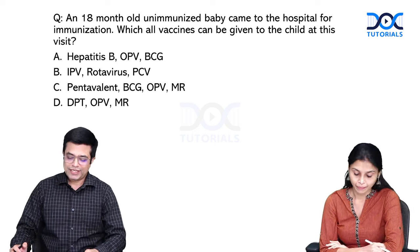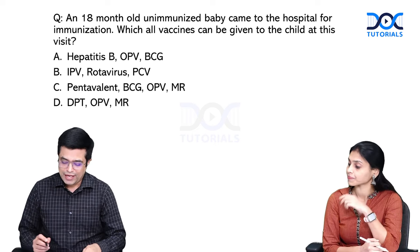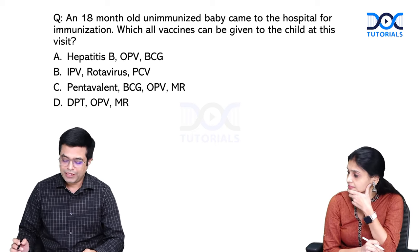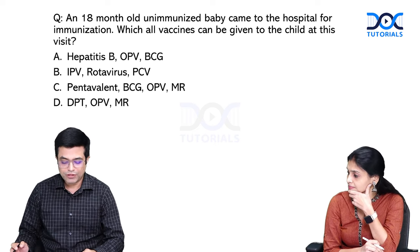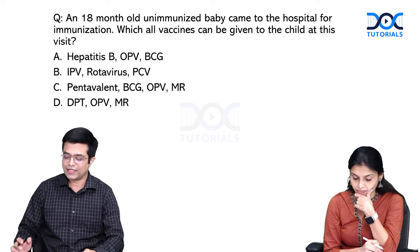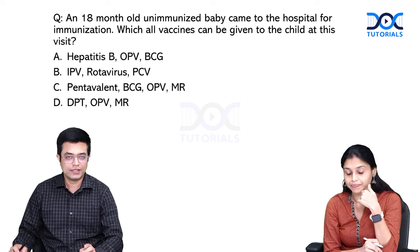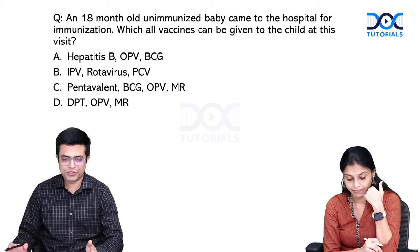The question says: an 18-month-old unimmunized baby came to the hospital for immunization. Which all vaccines can be given to the child at this visit? We have four options.